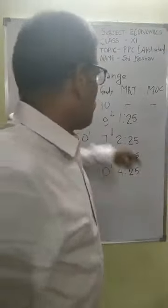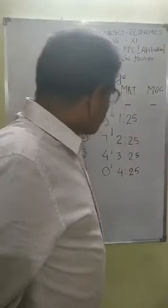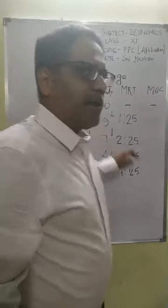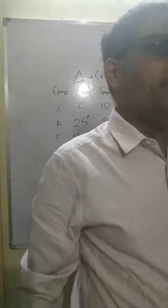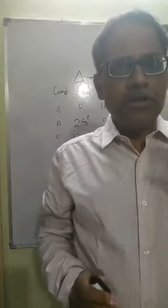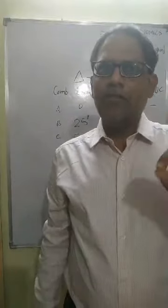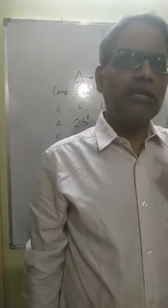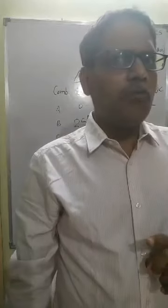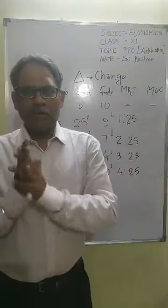Whenever a producer wishes to produce 25 more units of X, he has to sacrifice 1 unit of Y. This is called change. The formula uses delta units sacrificed: producer sacrifices 1 unit of Y in order to get an additional 25 units of X. The ratio of these two is called the Marginal Rate of Transformation.